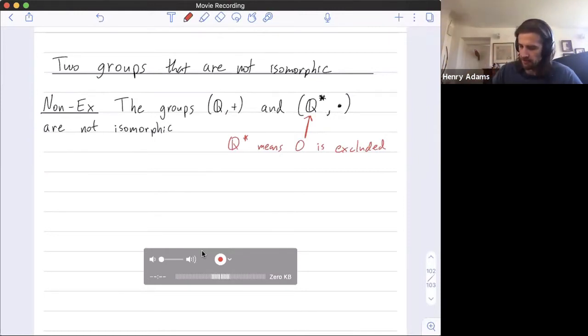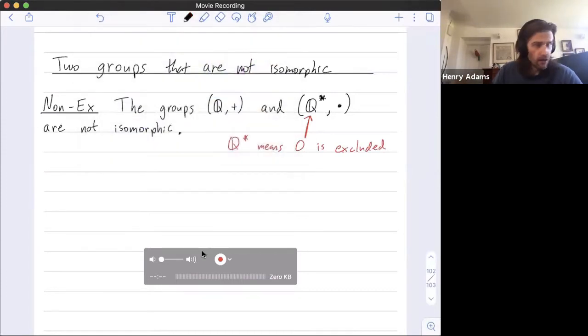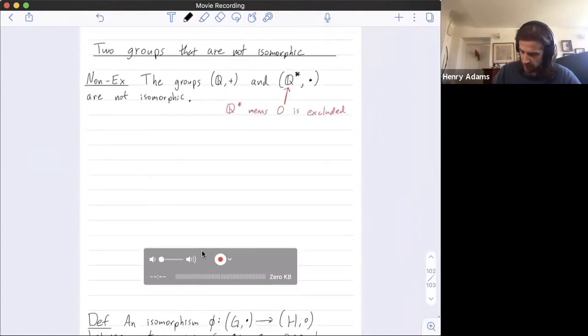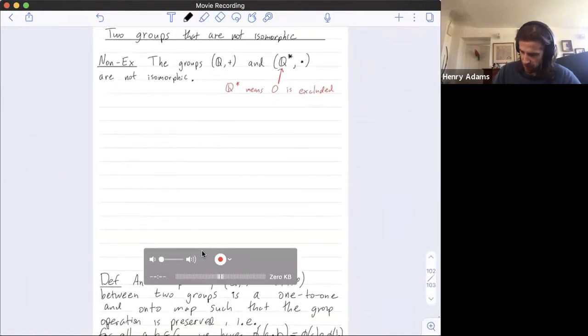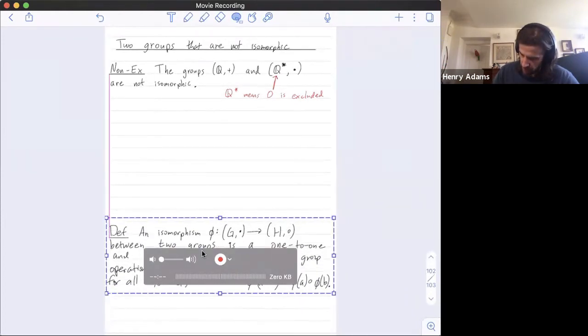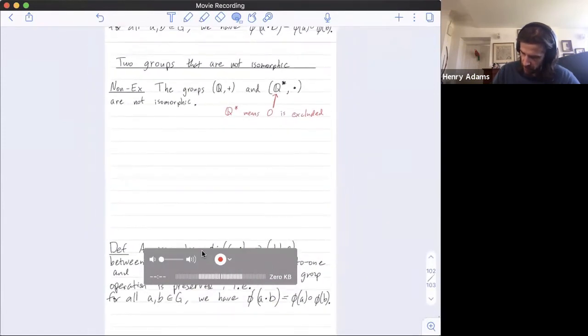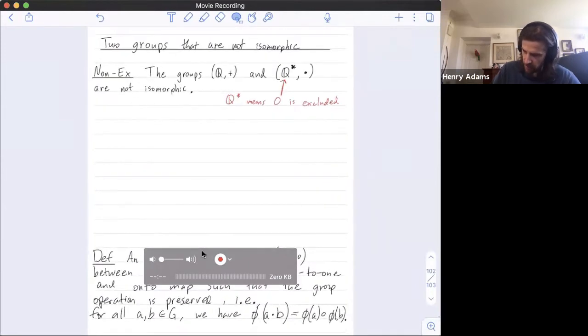So let's pause. What is an isomorphism? I have it down below. An isomorphism between two groups is a one-to-one and onto function, in other words, a bijective function, such that the group operation is preserved.